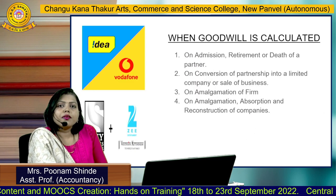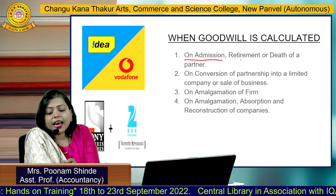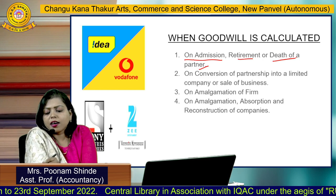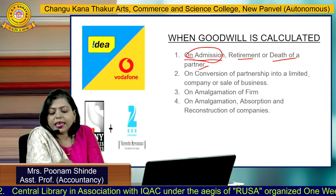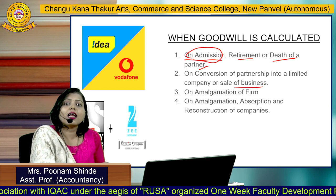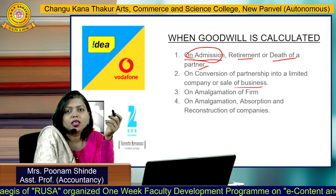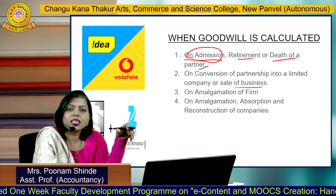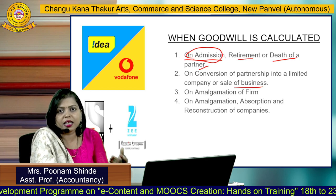When is goodwill calculated? Goodwill is calculated on admission, retirement, or death of a partner. It is also calculated on conversion of a partnership into a limited company, or a sale of business, and on amalgamation, absorption, and reconstruction. For example, when Idea and Vodafone merged, and when Sony merged with another company — in all these cases of merger, goodwill was calculated.